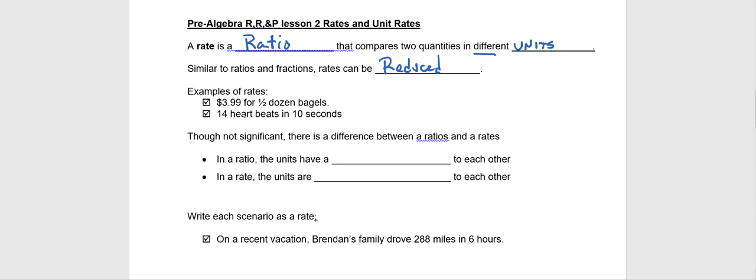So some examples, fairly common real-world examples that you might see is if you went to Brugger's Bagels and got a half dozen bagels, the price might be $3.99 for six bagels. Notice the units are different, they're not related to each other. There's dollars being compared to units that are bagels. Those are unrelated in any way.